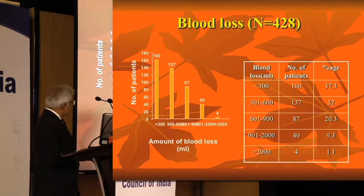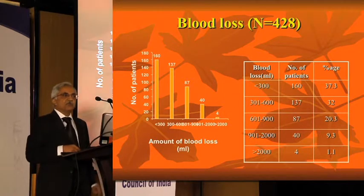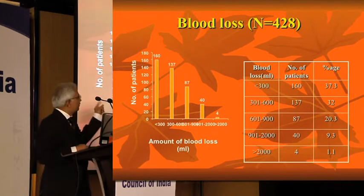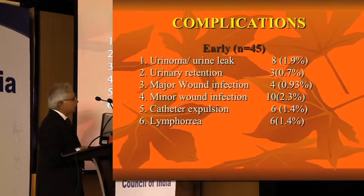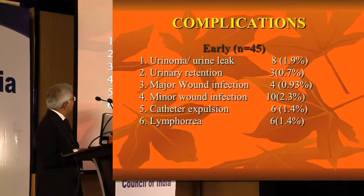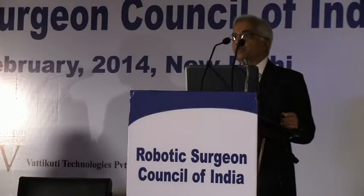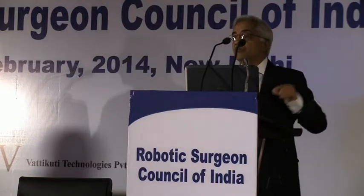Looking at blood loss: in the initial part, it was over 2 liters, but the minimum blood loss was 300 cc in open surgery. Complications: 45 patients out of 420 had some form of complications including urinoma, leak, and retention — standard occurrences in an open procedure series running over 15 years.